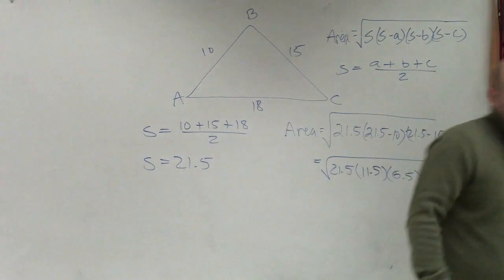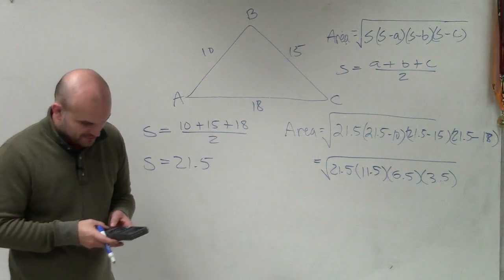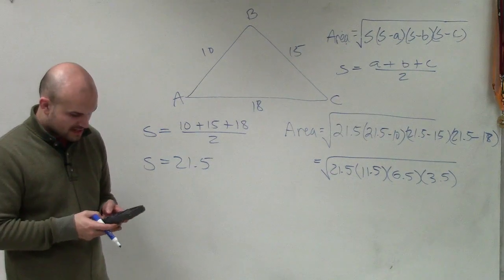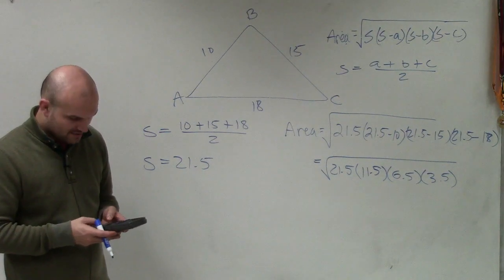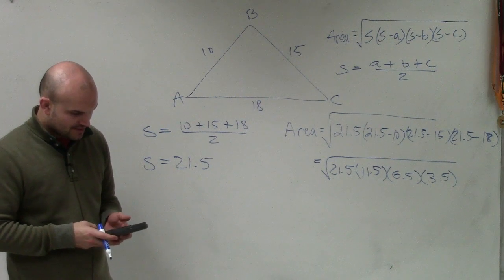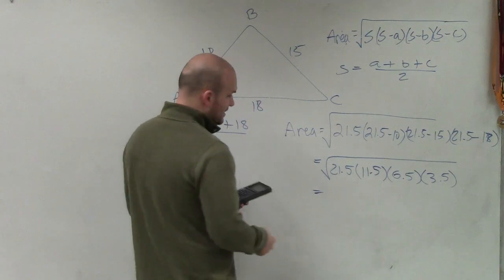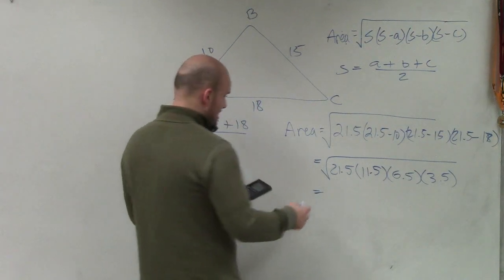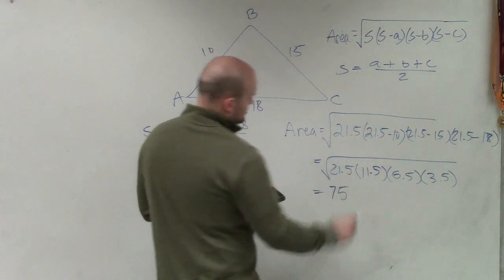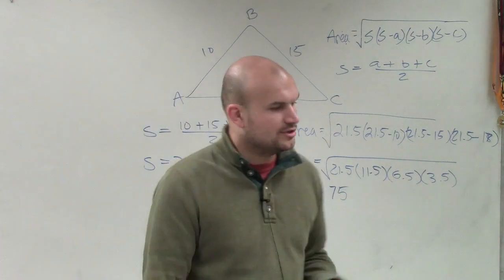I'd probably say go ahead and take your calculator and multiply all those together. So therefore, you'd have 21.5 times 11.5 times 6.5 times 3.5. Take the square root of that answer, and you get 74.999, which you can round to 75. And then, obviously, if there are units or something on there, that would be units squared.